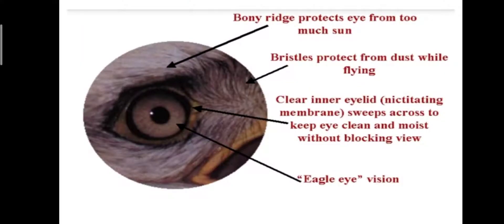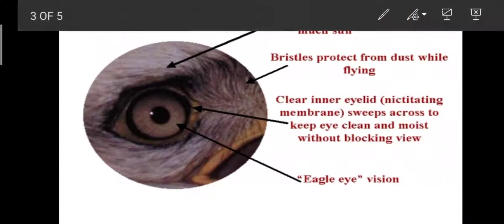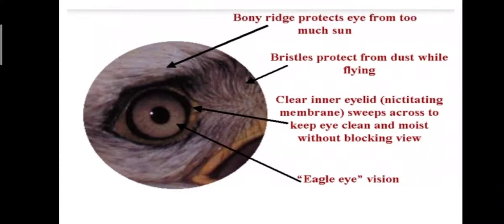Regarding eagle eye vision, a bony ridge protects the eye from too much sun. Bristles protect from dust while flying, and a clear inner eyelid — the nictating membrane — is swept across to keep the eye clean and moist without blocking view.